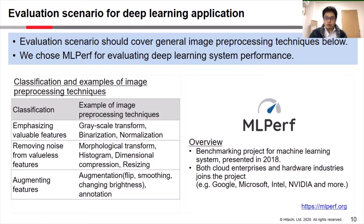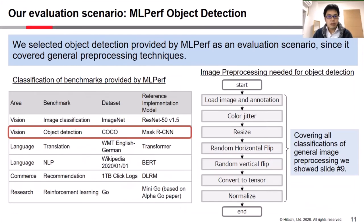We selected object detection provided by MLPerf as an evaluation scenario. MLPerf covers general deep learning techniques as shown in the table. We selected object detection because it covers general preprocessing techniques and is widely used in various areas such as autonomous driving and cancer detection.